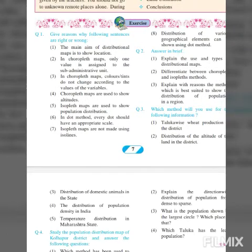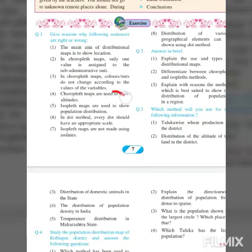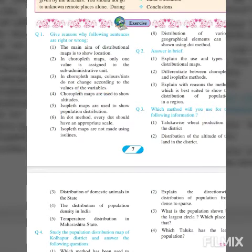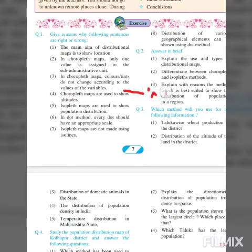Now we move on to question 1.4. 'Chloropleth maps are used to show altitudes.' This statement is wrong, and the reason is on page number three. Actually, isopleth maps are used to show altitudes, not chloropleth maps. We will write the answer properly with respect to the textbook given headings.